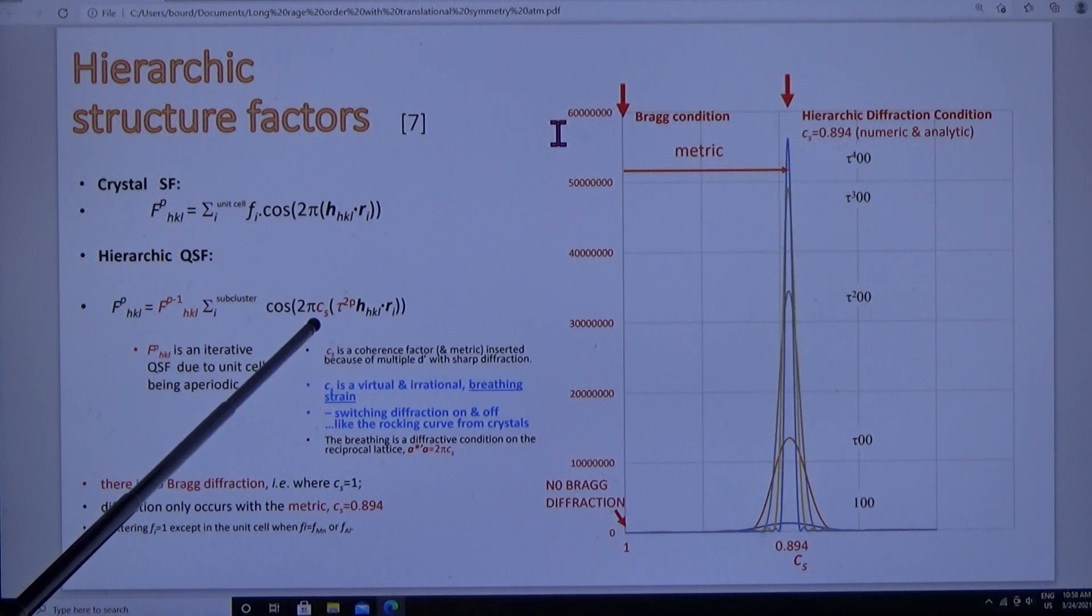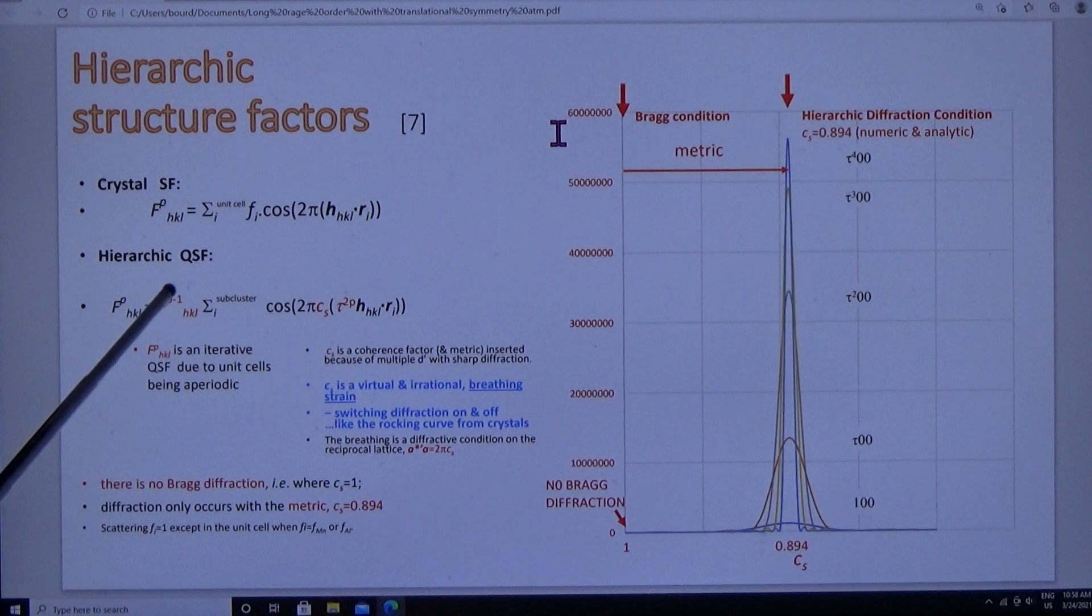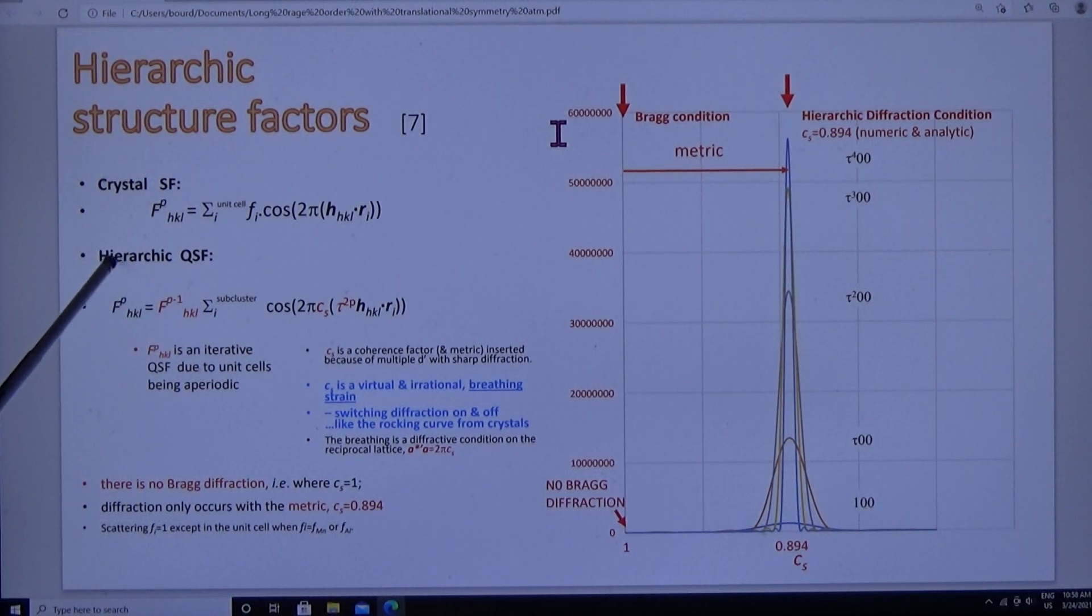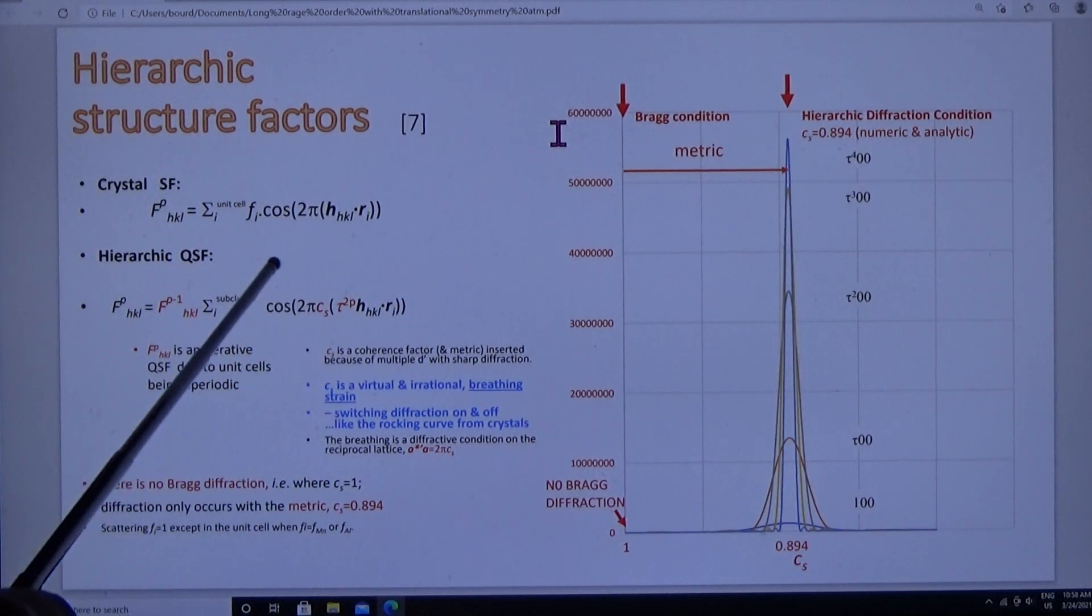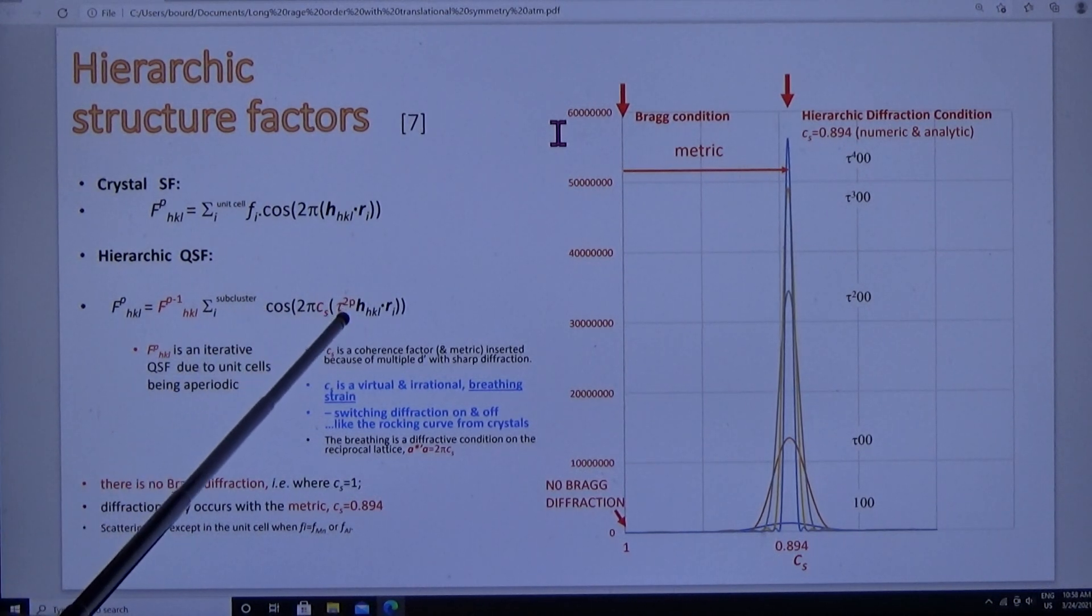For the quasicrystal, we make two adjustments. Because we have sharp diffraction but multiple d-spacings, we include a coherence factor. We're going to derive this in detail as we go along. Secondly, because our unit cell is not periodically repeating, we have to sum over the whole quasicrystal, and we have to do this iteratively.